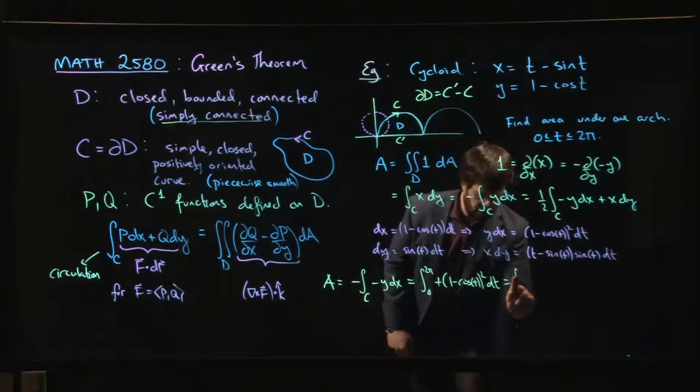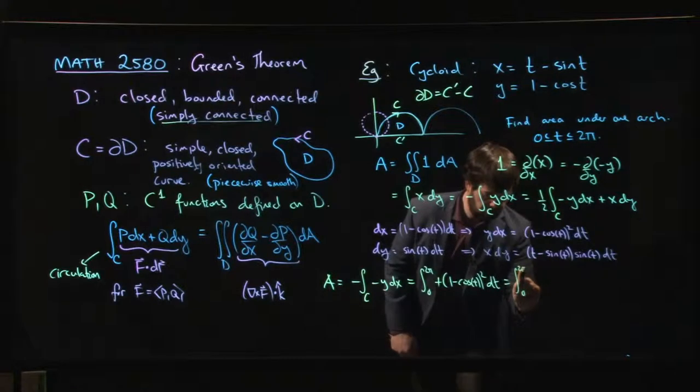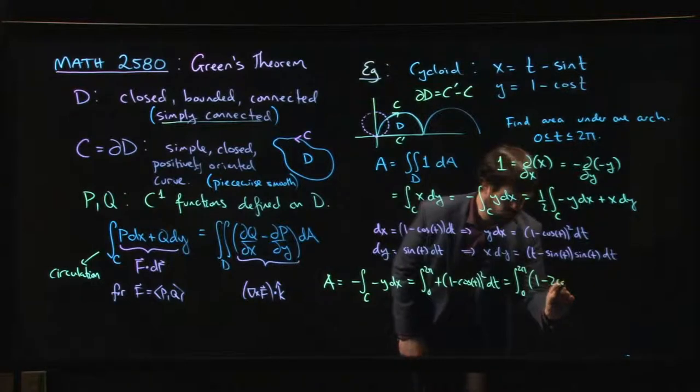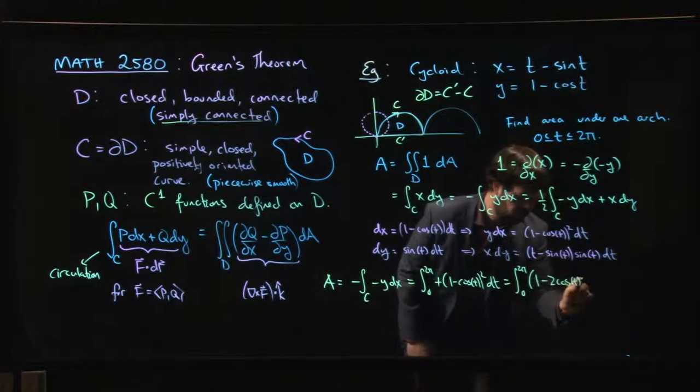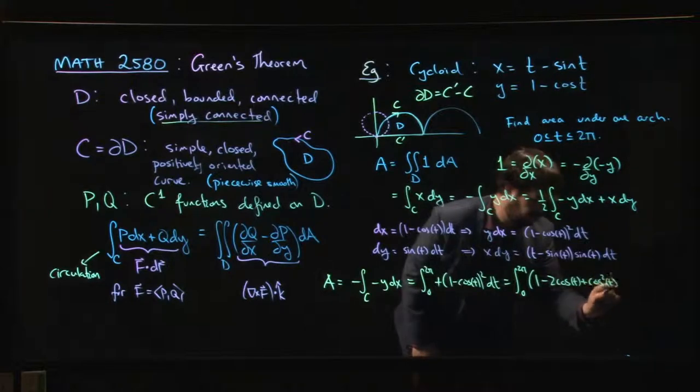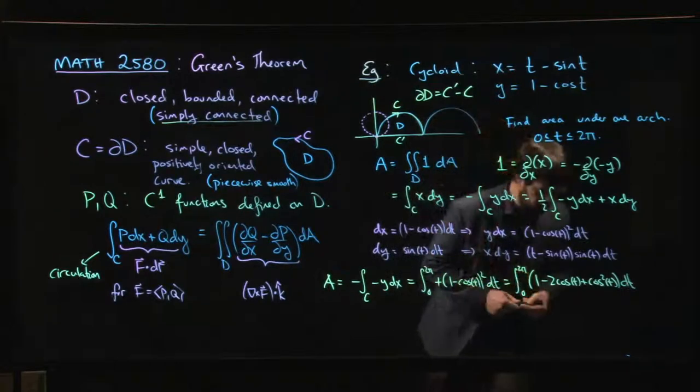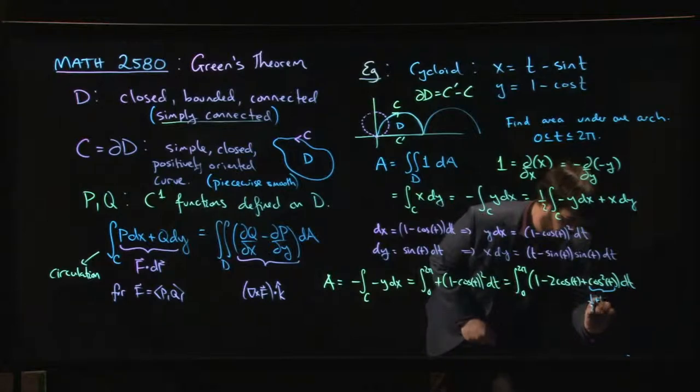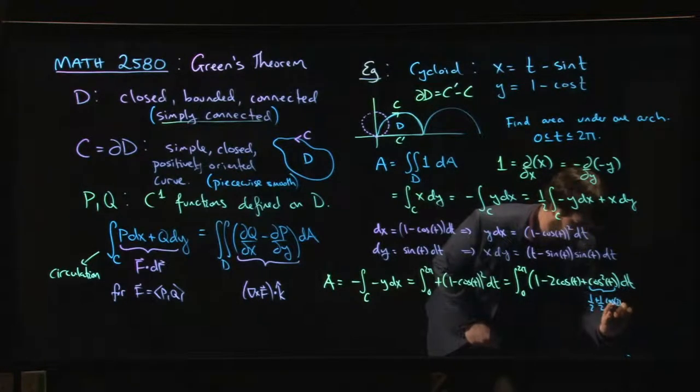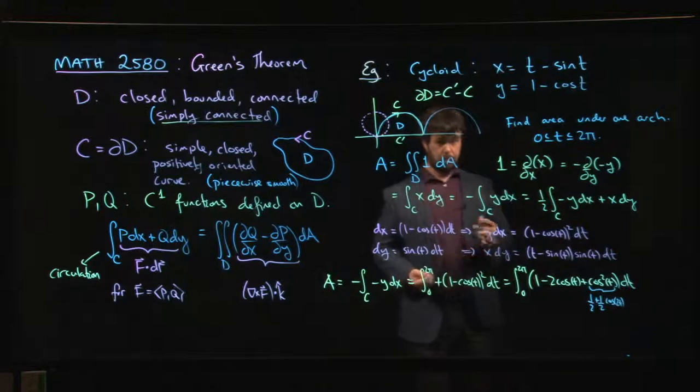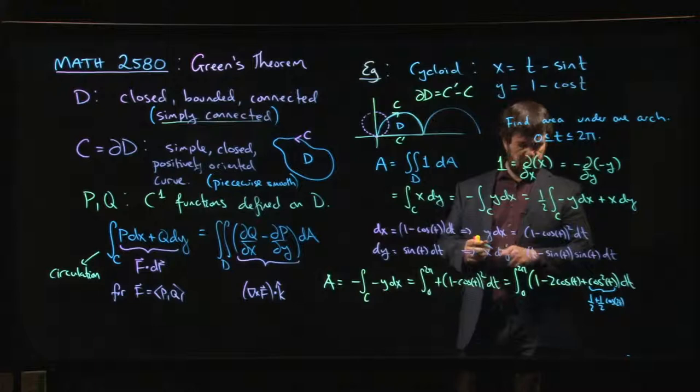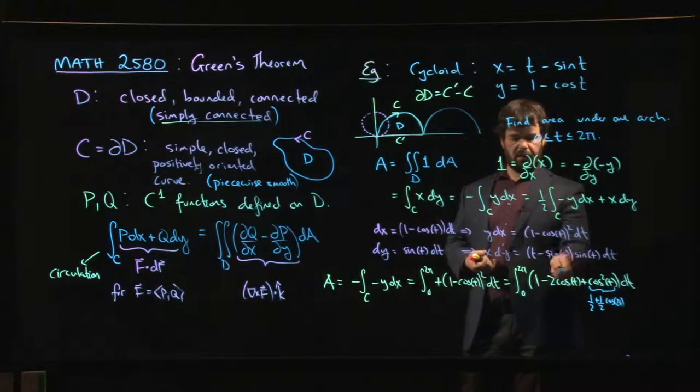All right, and now I'm all set because what I have is the integral from 0 to 2π of 1 minus 2 cos t plus cos squared t dt. Now we remember that cos squared t, I can write that as one half plus one half cos 2t. One plus a half is three halves.